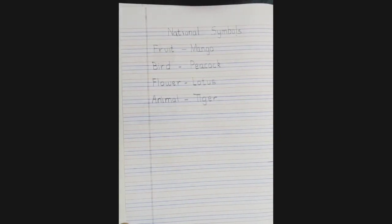So did you see children? We have written the four national symbols. Like a fruit is mango, a bird is peacock, flower is lotus, and animal is tiger. In the similar manner, you will be writing in your notebook.